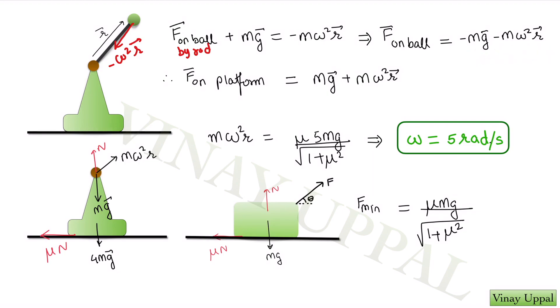Now because the rod is light, the net force on the rod should be zero. So the force that the rod applies on the ball, rod should apply a negative of that on the motor. So force on the platform which is the motor is part of the platform, once again by the rod, should be negative of this. So it should be mg plus m omega square r.